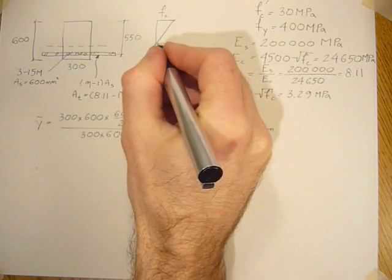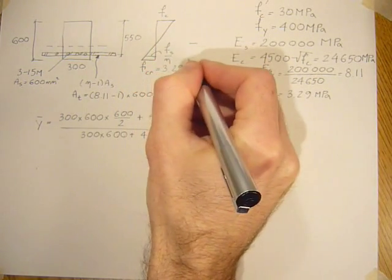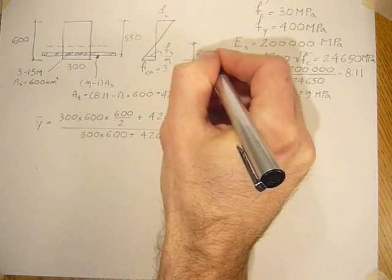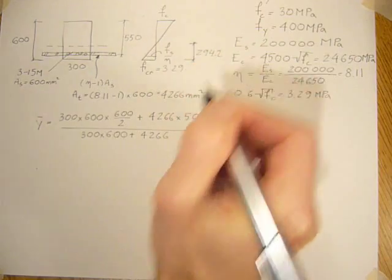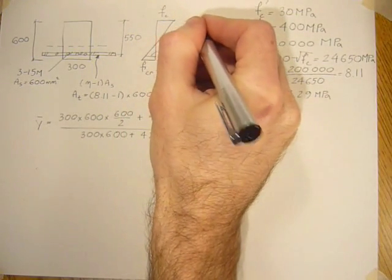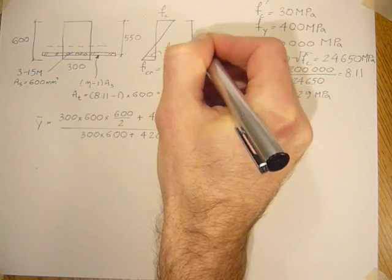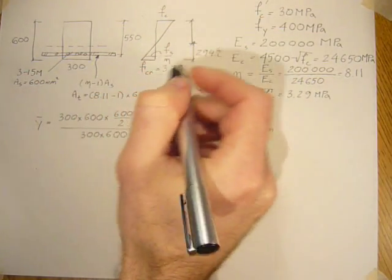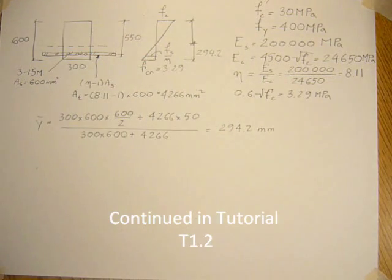So that's the distance from the neutral axis to the bottom fibers in bending, 294.2. And then the distance from here to here would be 600 minus 294.2, 305.2. So 600 minus 294.2.